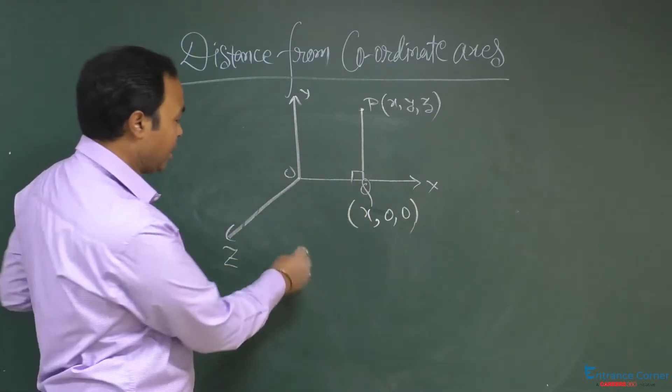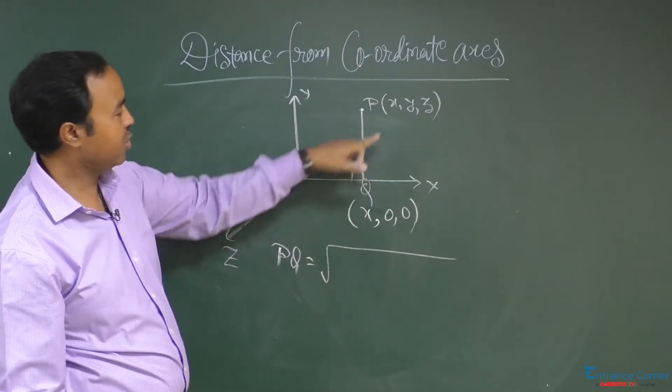The distance between these two by using the distance formula, PQ is equal to root under x2 minus x1 whole square. x2 minus x1 whole square, it means x minus x whole square becomes 0 plus y2 minus y1 whole square, y minus 0 whole square, it becomes y square. Then z2 minus z1 whole square, that is z minus 0 whole square, that is z square.